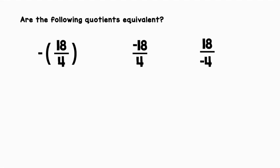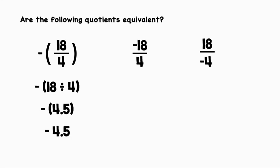Are the following quotients equivalent? Let's evaluate each of these expressions to find out. Starting on the left, we can rewrite this as negative (18 divided by 4). We evaluate what's in the parentheses first: 18 divided by 4 is 4.5. We bring down the negative sign, so that is the same as negative 4.5.